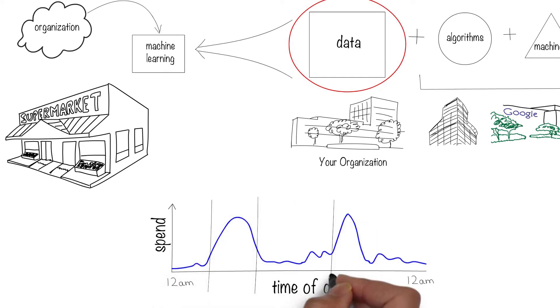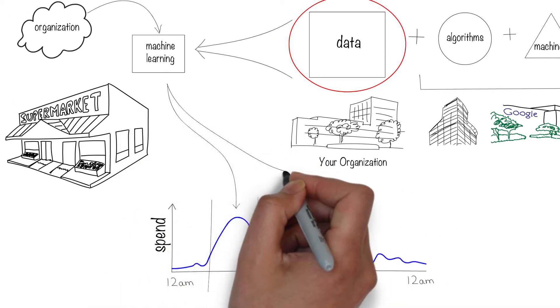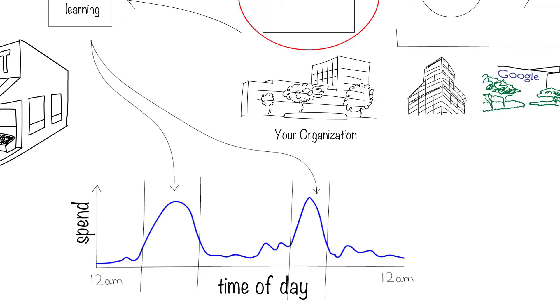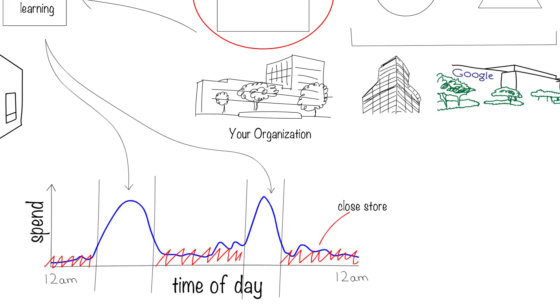So you feed this data into a machine learning algorithm and figure out that most business is in the mid-morning and late afternoons, something like this. Based on this result, you figure that you might want to close the store during the non-busy hours. That's what your machine learning algorithm told you, and that's great.